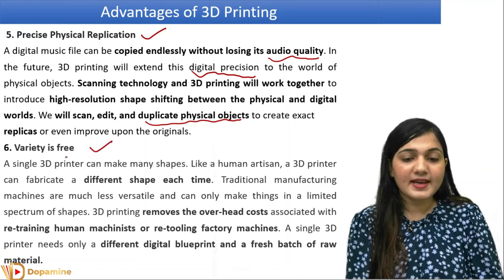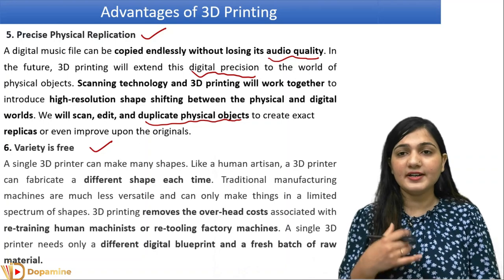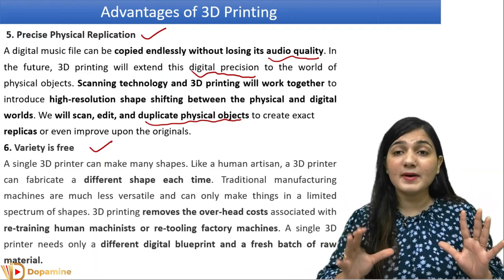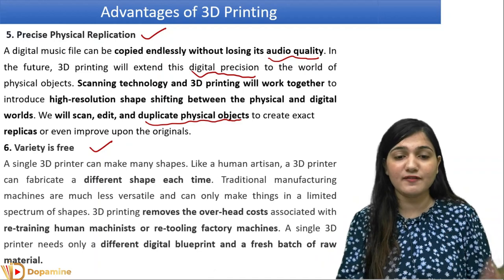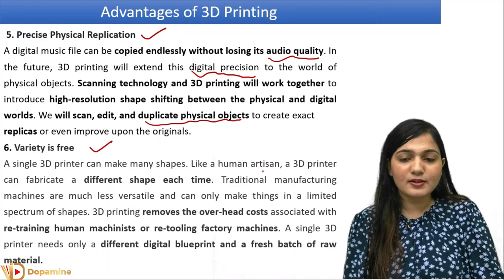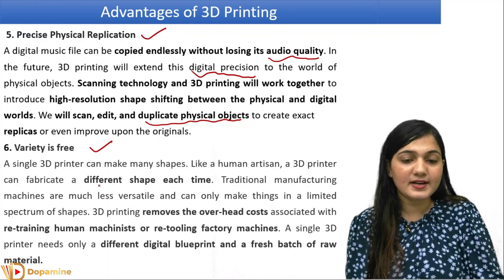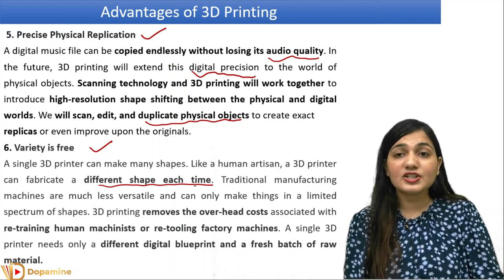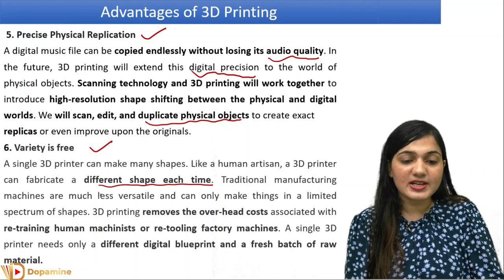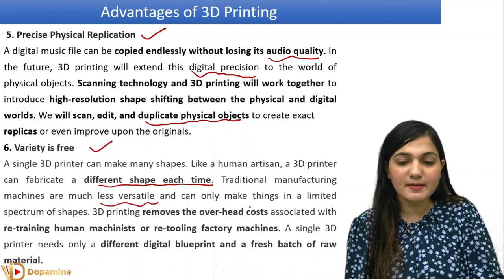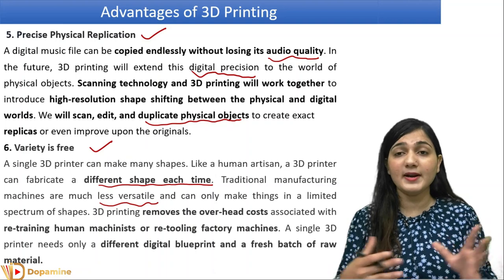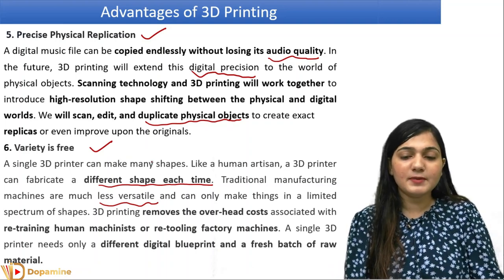Variety is free in 3D printing. In traditional manufacturing, we make a lot of objects of the same type — variety is very low because it is mass bulk manufacturing. In 3D printing we can make a single object at a time, and just like a human artist, a 3D printer can fabricate different shapes each time according to the requirement. Traditional machines are much less versatile and can only make things in a limited spectrum.